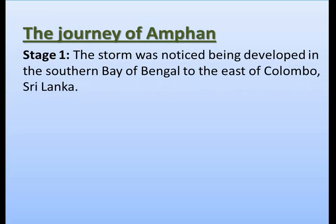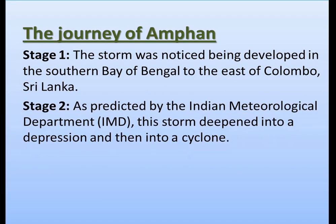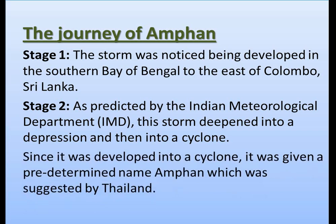The journey of Amphan can be divided into stages. In Stage 1, the storm was noticed being developed in the southern Bay of Bengal, to the east of Colombo, Sri Lanka. In Stage 2, as predicted by the Indian Meteorological Department (IMD), the storm deepened into a depression and then into a cyclone. Since it developed into a cyclone, it was given a predetermined name — Amphan — which was suggested by Thailand.